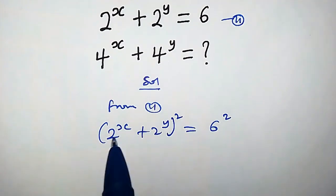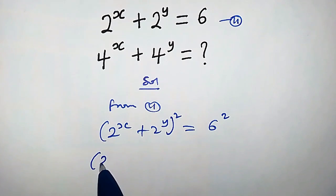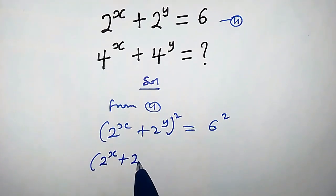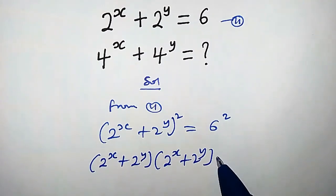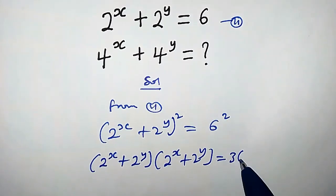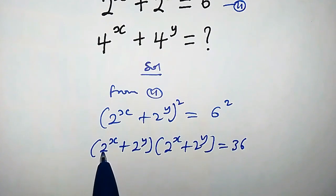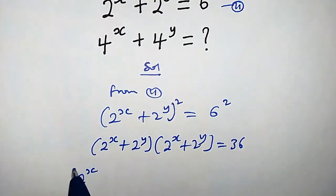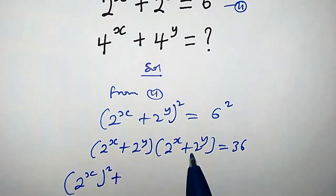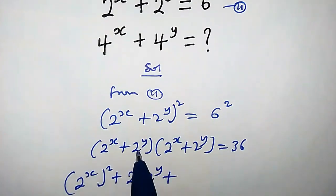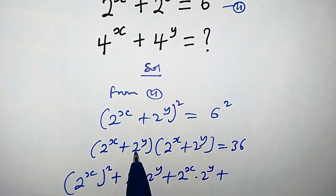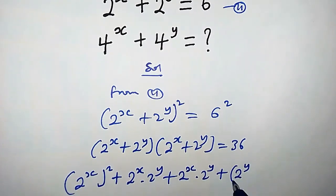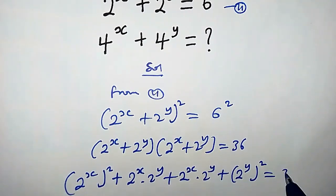When we expand the squared expression, we get 2 to the power of x plus 2 to the power of y, times 2 to the power of x plus 2 to the power of y, equals 6 squared, that is 36. Opening the bracket: 2^x times 2^x, plus 2^x times 2^y, plus 2^y times 2^x, plus 2^y times 2^y, all equals 36.